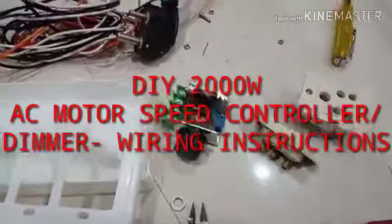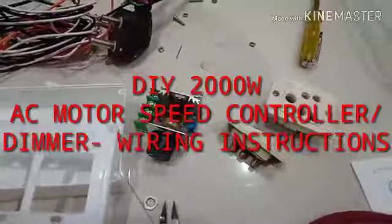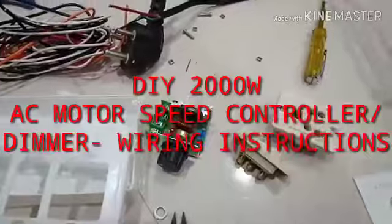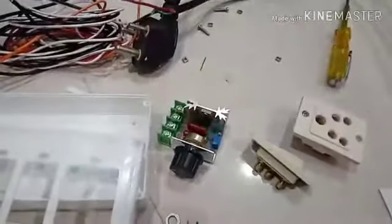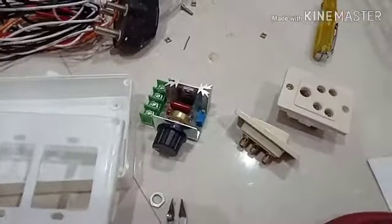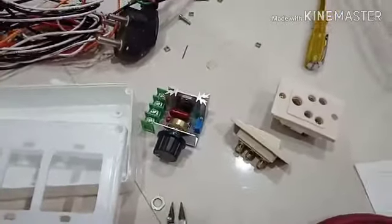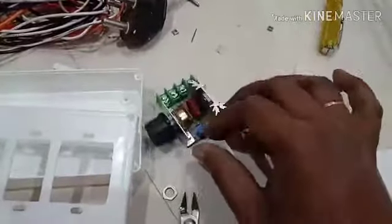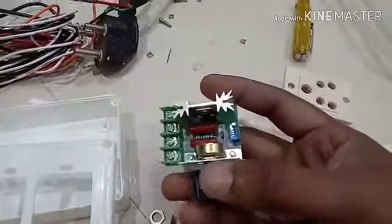Hi friends, good morning and welcome. In this video I am going to show you how to build a 2000 watt dimmer circuit or a variable speed controller.